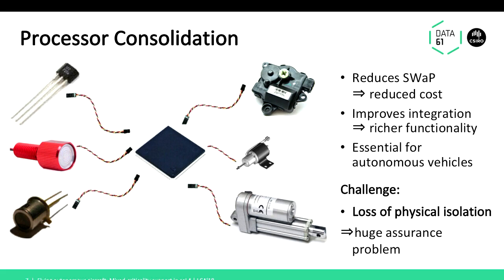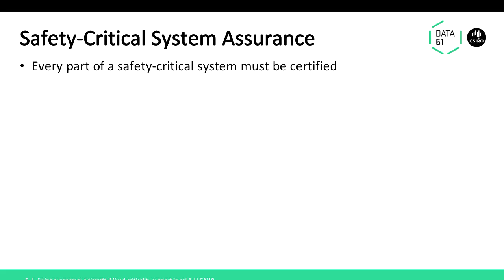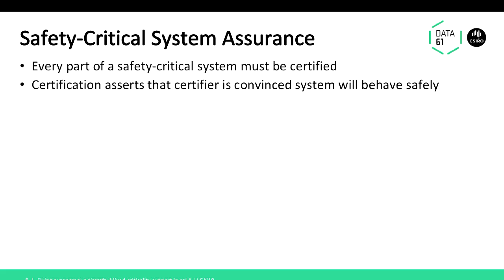The challenge is you lose the nice properties of physical isolation. In a physically isolated system, if something goes haywire, the rest is unaffected. That's no longer the case with consolidation, and somehow you need to get the same isolation in different ways. You need to do it in a way that lets you certify the software or the overall system. Every part of a critical system must be certified — meaning you need to convince a certifier, ultimately a person who gives a stamp that the system is safe.